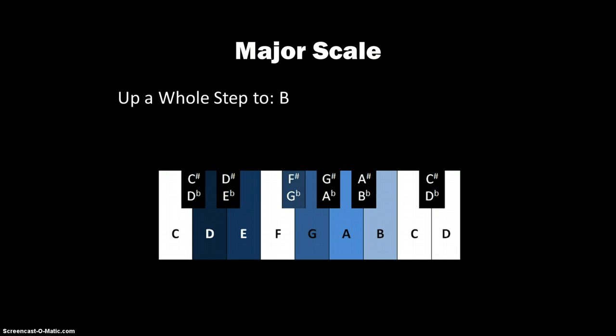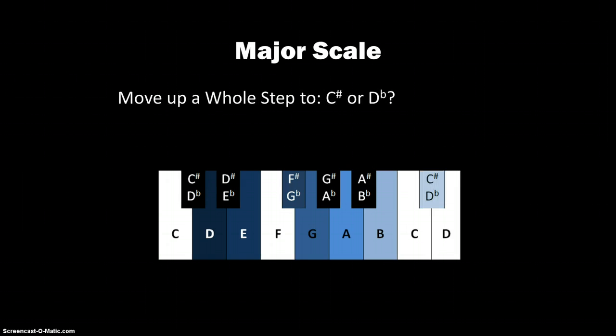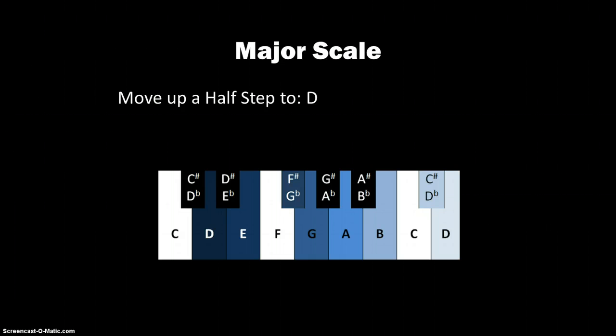So we move from A up a whole step to B, up another whole step. Now, are we going to use C sharp or D flat? That's right, we're going to use C sharp. And then we move up a half step so that we are on D.